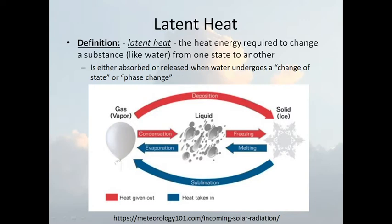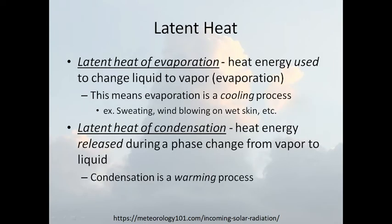Sublimation is the opposite, where the solid goes straight to a gas. The best example is dry ice — it's a solid, and that ice is just evaporating right into the air, and you get that fog that comes off of dry ice. The difference between these phases is whether heat is being released or taken in. The latent heat of evaporation is the heat energy used to change liquid to a vapor — meaning evaporation is a cooling process.